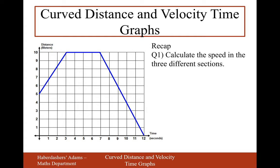Let's get into a few recap questions. To calculate the speed of the three different sections: the first section goes from distance 5 up to 10, and from 0 to 3 on the time axis. To work out the speed, we work out the gradient — it's going right by 3 and up by 5. So the gradient, difference in y divided by difference in x, is 5 divided by 3, which is 1.67 metres per second.